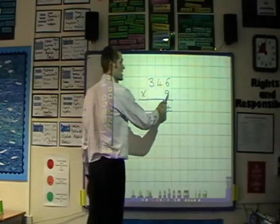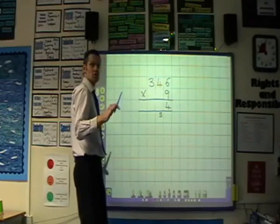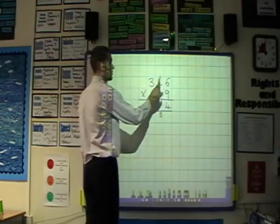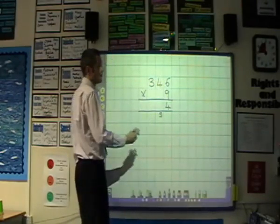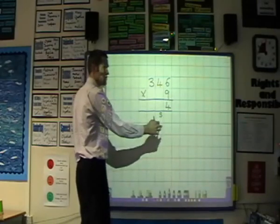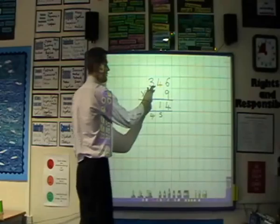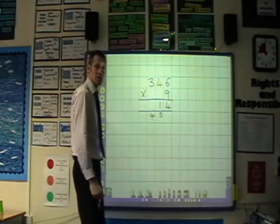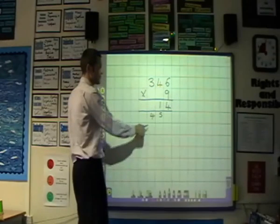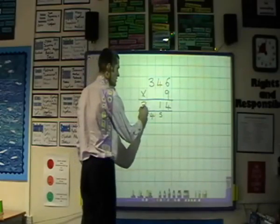Then we multiply 4 by 9, but we ensure the children remember that they are actually multiplying 40 by 9 really. 4 nines are 36 plus the 5 is 41, and finally 300 times 9, 3 times 9 which is 27 plus the 4 is 31.